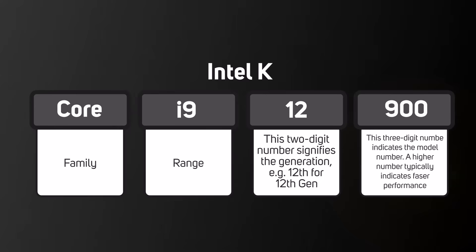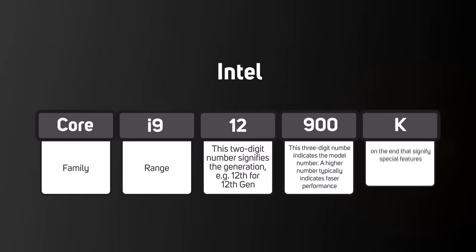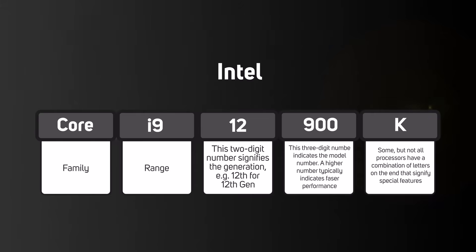And last but not least, the letter at the end denotes a special feature, so in the case of the Core i9-12900K, the K indicates the CPU is for overclocking. Whilst if there was an F, this indicates that there's no integrated GPU.